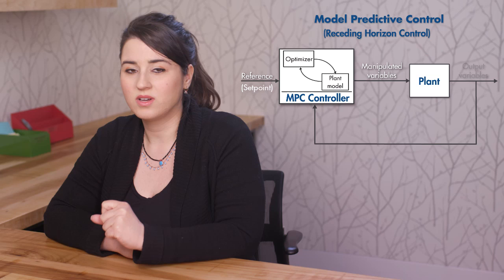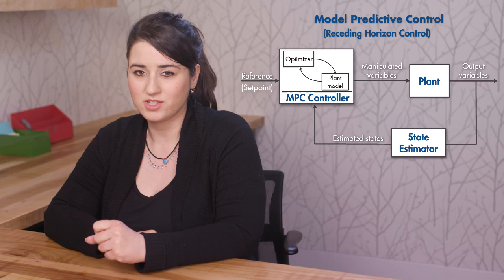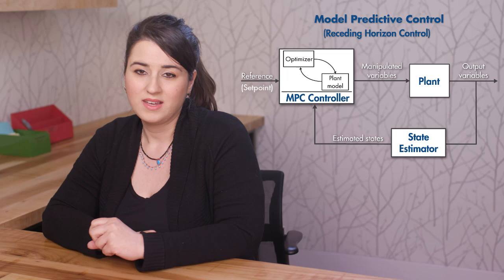You may also notice a state estimator in the feedback diagram. In the car example, we assumed that the lateral position of the car can be measured. But if you cannot directly measure the states of a system, they can be estimated by a state estimator and fed back to the MPC controller. To find out more on state estimators, check out the Controls Tech Talk series on Kalman filters.